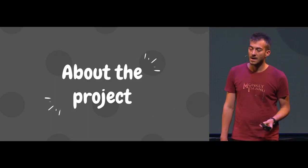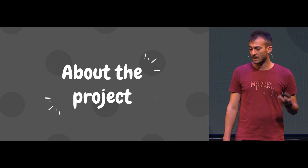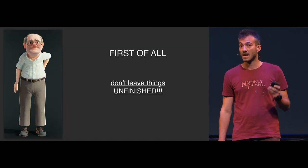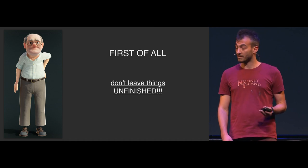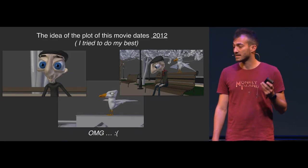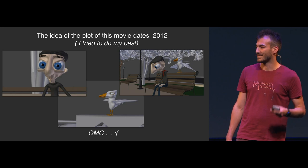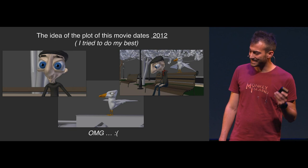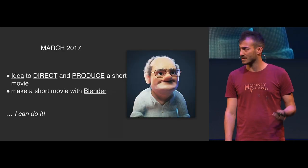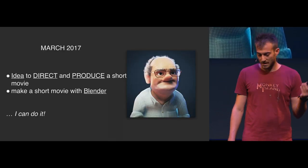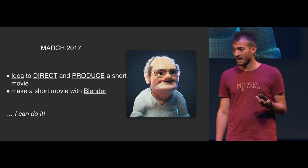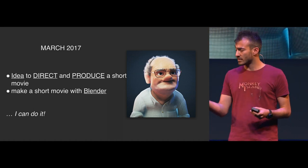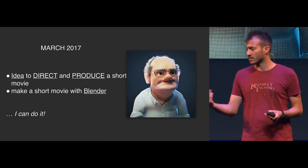What about the project? Arturo and Gabbiano is a short movie that I started almost seven years ago, and I interrupted it because I didn't have the skills — it was horrible. Last year, in March, I started the idea to finish and restart this movie, to direct and produce the short movie, of course in Blender.